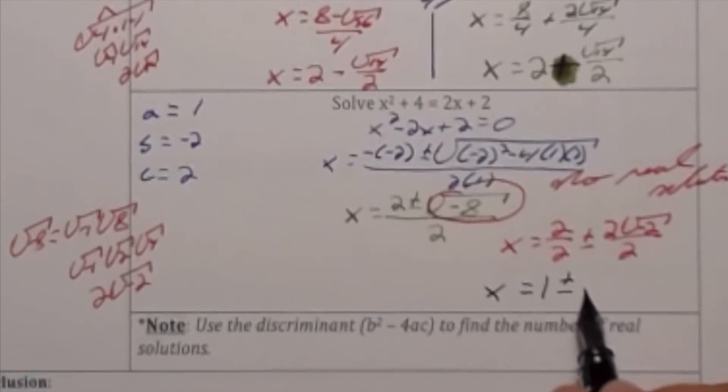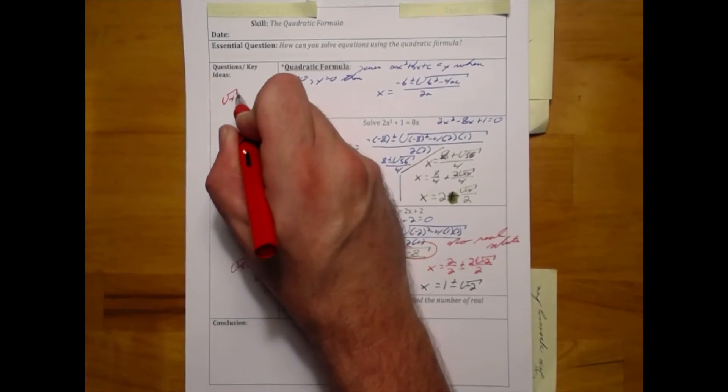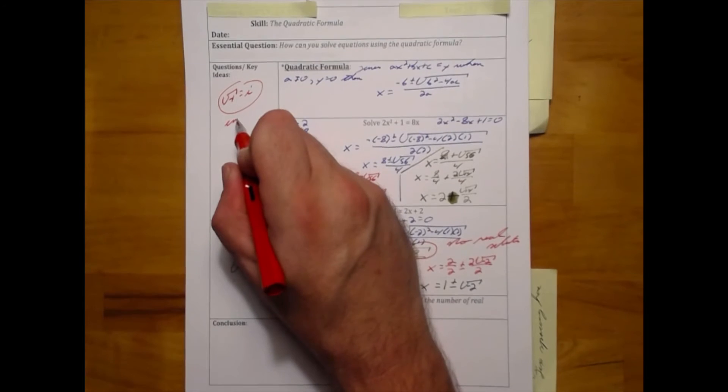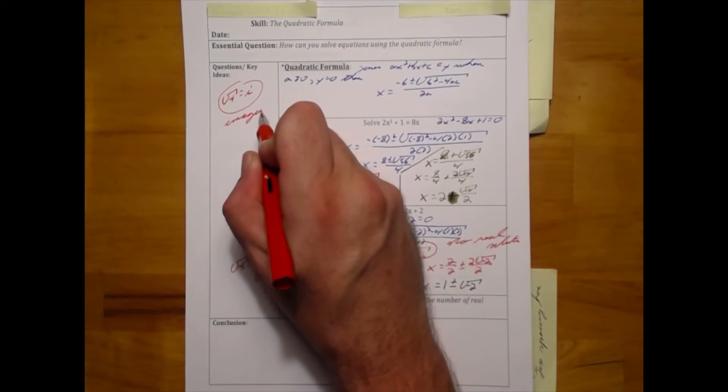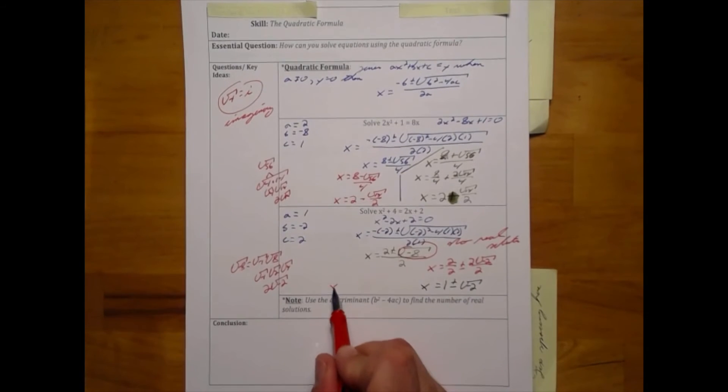To neaten this up, we need to know that the square root of negative 1 is represented by the letter i, which means that is imaginary as an answer. So we will rewrite this answer as x is equal to 1 plus or minus i radical 2.